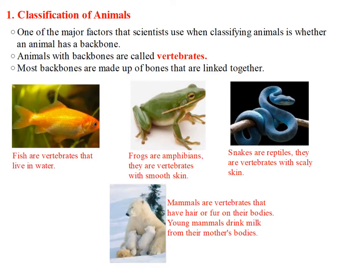Let's talk in detail about classification of animals. One of the major factors that scientists use when classifying animals is whether an animal has a backbone. Animals with backbones are called vertebrates. Most backbones are made up of small bones that are linked together.